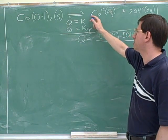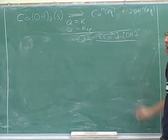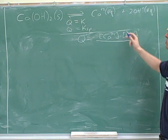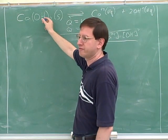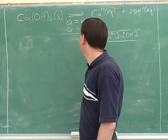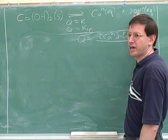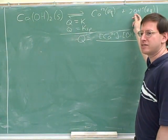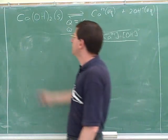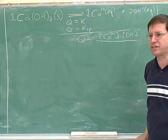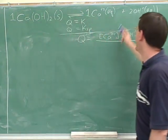For calcium hydroxide dissolving, the coefficient on calcium is 1 and on hydroxide is 2. That's why it was so important to write the 2 in front of OH in the balanced equation — if we forget the coefficient, we'll get the exponent wrong. Every time we dissolve 1 unit of calcium hydroxide, we get 1 calcium ion and 2 hydroxide ions. So every time we dissolve 1 mole of this, we get 1 mole of calcium cations and 2 moles of hydroxide anions.